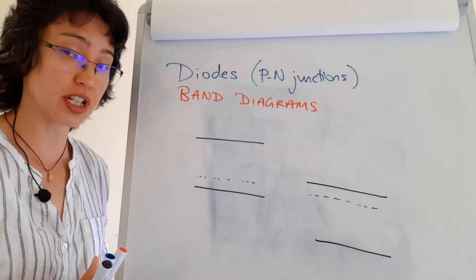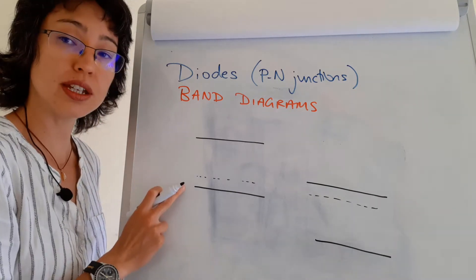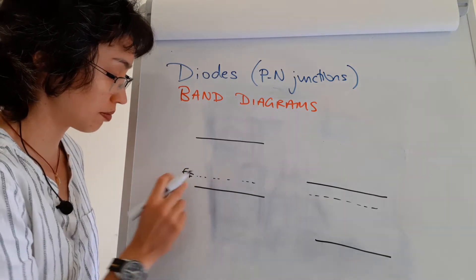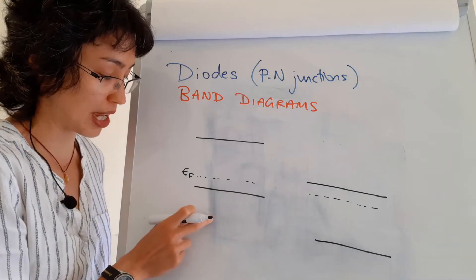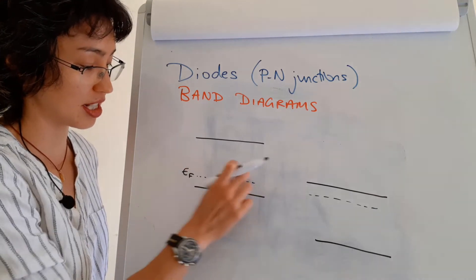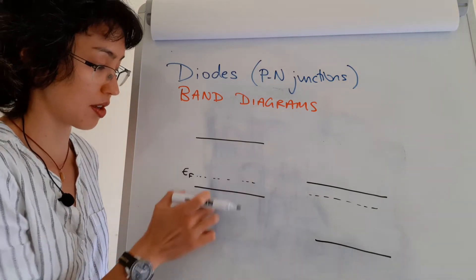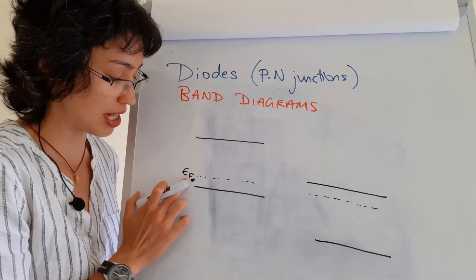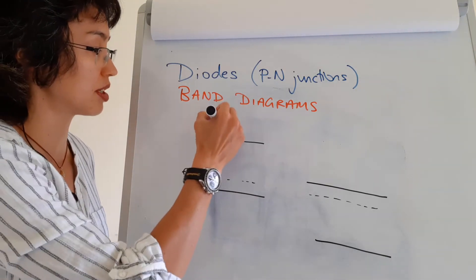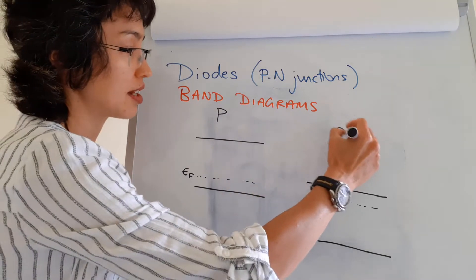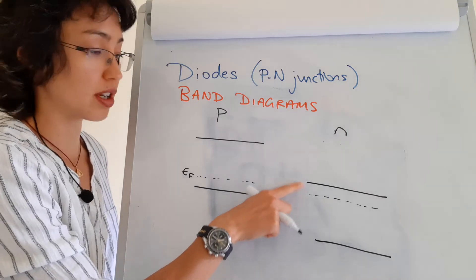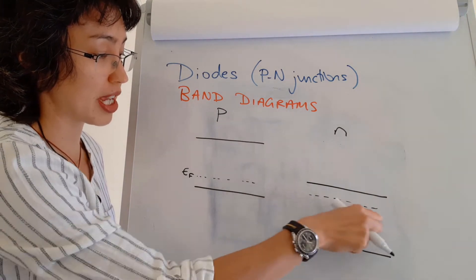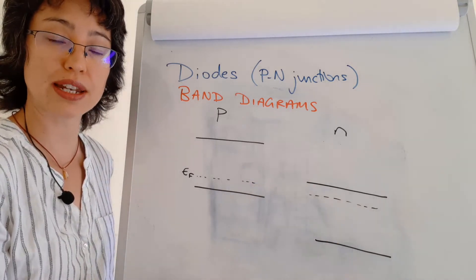For a P-type semiconductor, you have your conduction band and valence band, and your Fermi level sits very close to the valence band because acceptor atoms have an energy level there and electrons can jump into that acceptor level to ionize those atoms. For an N-type semiconductor, the Fermi energy EF is very close to the conduction band, and extra electrons from group 5 atoms sit in the donor level and can jump into the conduction band if they have enough energy.